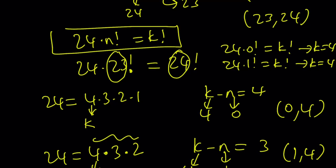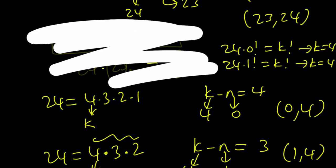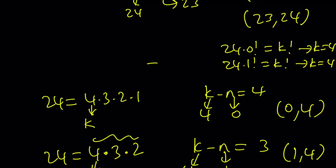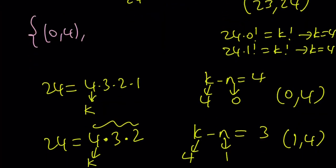And to summarize everything we have so far, let's go ahead and write down all the solutions together. So for completeness sake, we got 0 comma 4. And by the way, these are n comma k ordered pairs. 0 comma 4, 1 comma 4, and 23 comma 24. And there are three solutions to this equation.